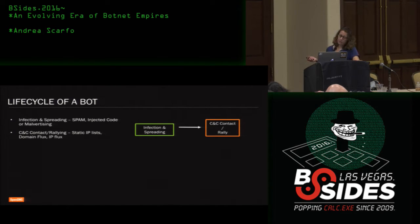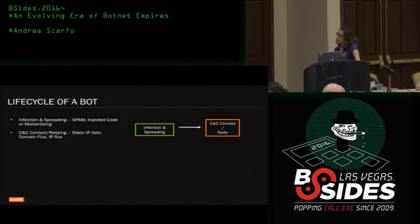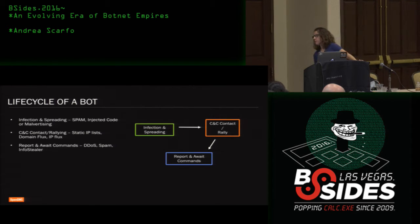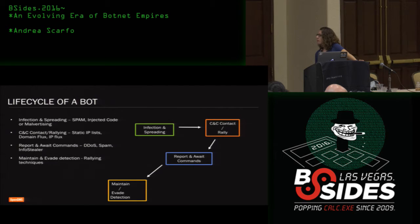Through a DGA — a domain generation algorithm — it will produce thousands of domains, and only one out of those thousands will actually be used as a command and control server. They'll also use IP flux, constantly changing the IP that the domain resolves to. Once the bot makes contact, it's ready to accept commands and report back. It can be used as part of a DDoS attempt, as a spam bot to spread further infection, or as an info stealer. The goal is to maintain the bot, keep it there, evade detection, using the same domain flux and IP flux techniques.